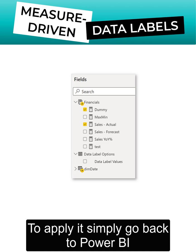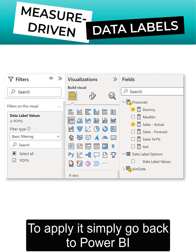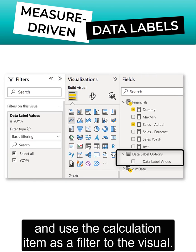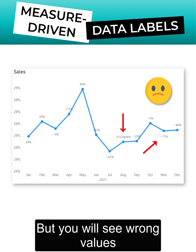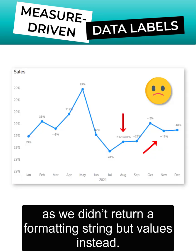To apply it, simply go back to Power BI and use the calculation item as a filter to the visual. But you will see wrong values, as we did not return a formatting string but values instead.